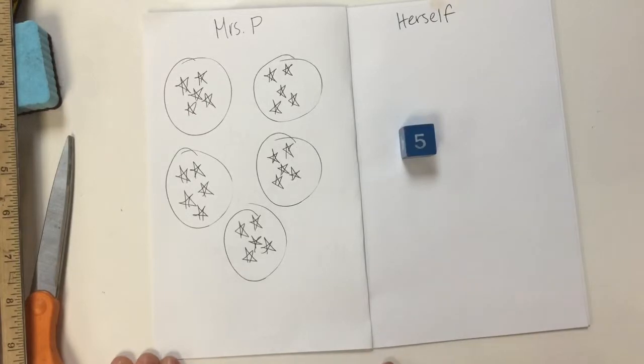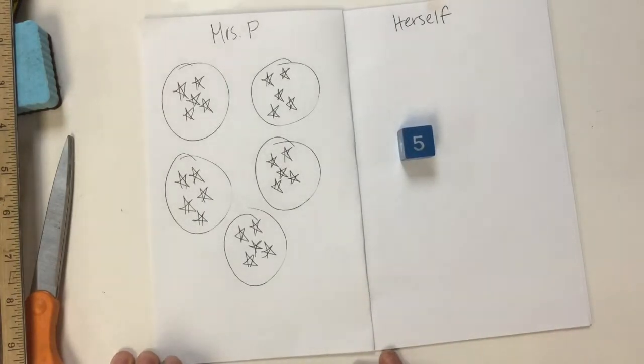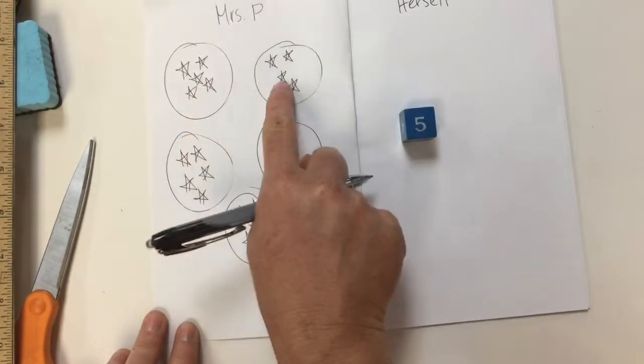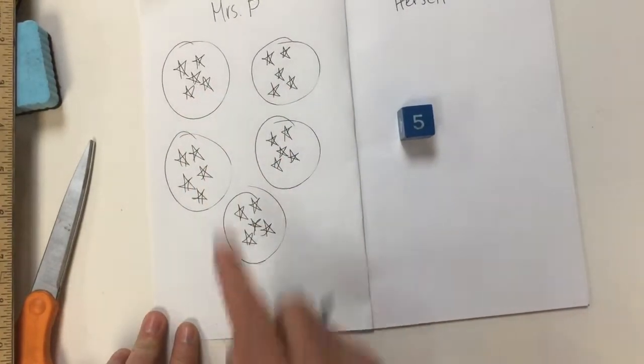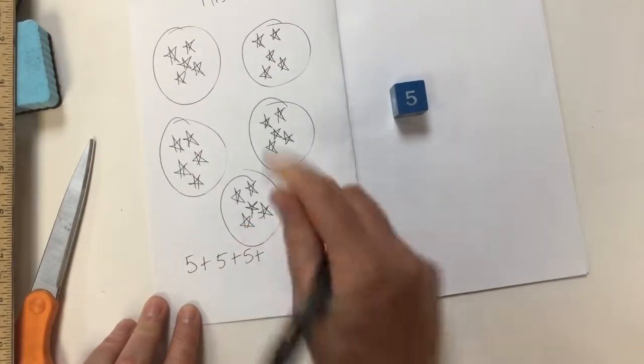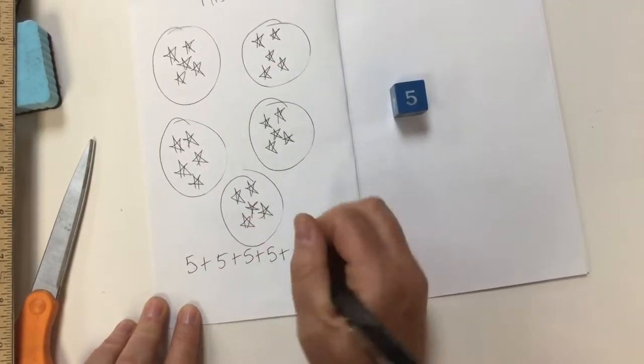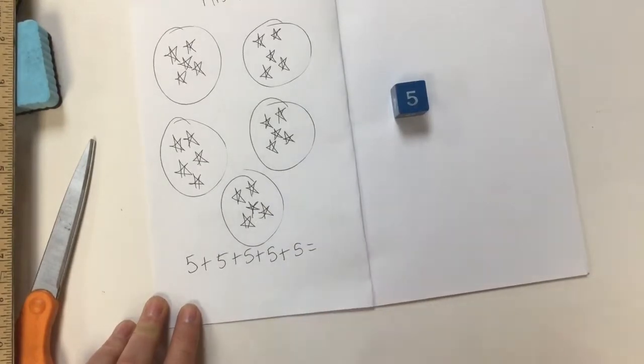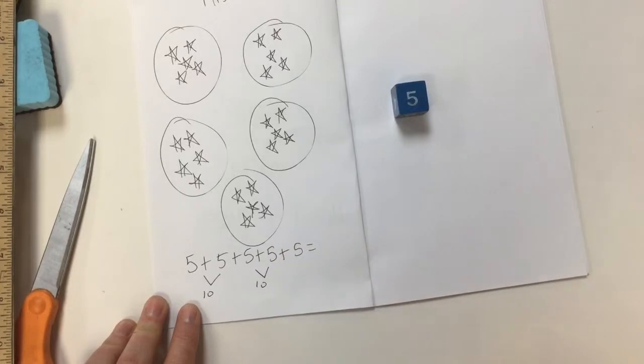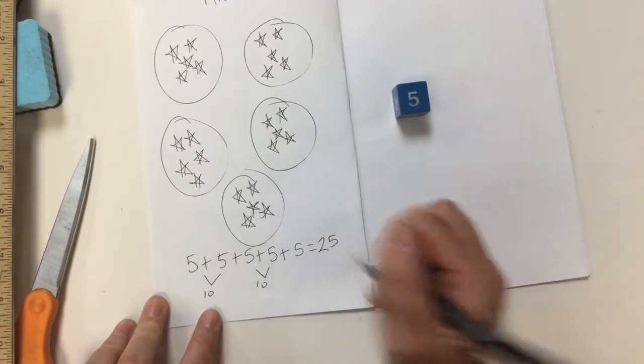Once your stars are all drawn then you write your repeated addition sentence. There are five stars in each of these circles. So there's five plus five. And you figure out the total whether you're counting by fives or adding up a little bit, you find out that it equals 25.